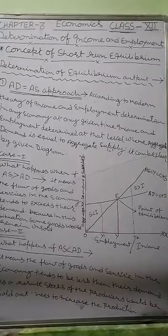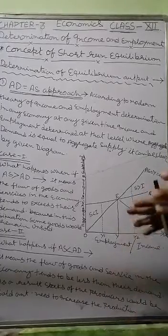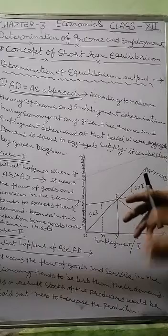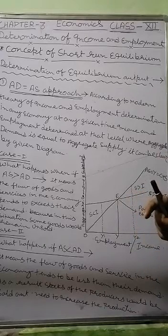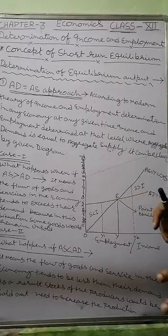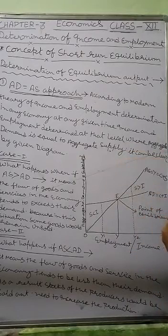Indeed, every economy tries to get that equilibrium between aggregate demand and aggregate supply, because it is the prime objective of every economy to achieve that type of equilibrium.